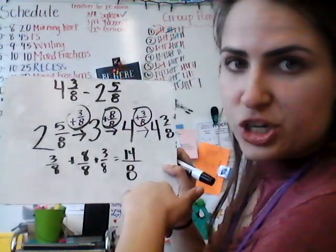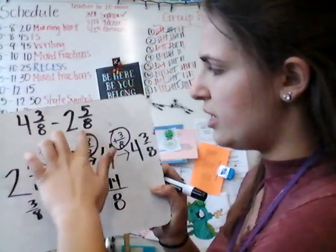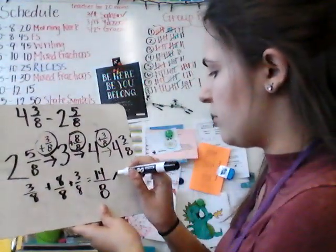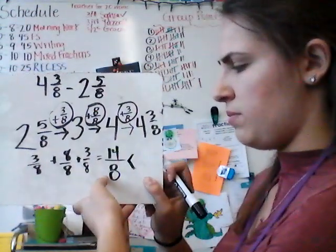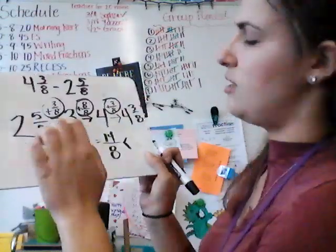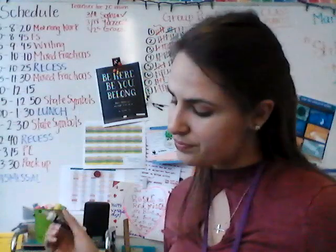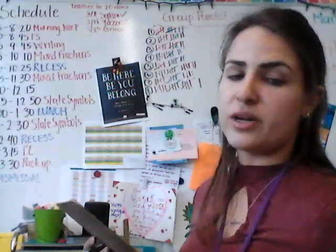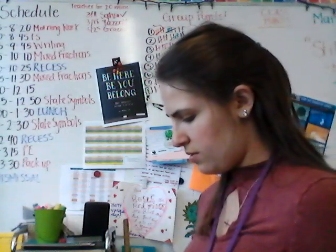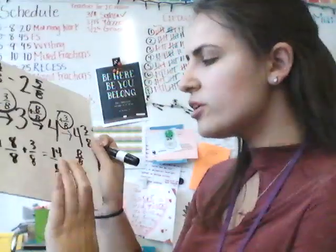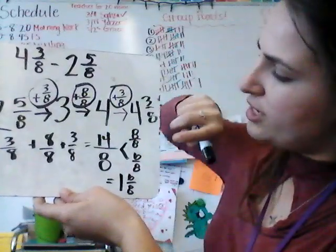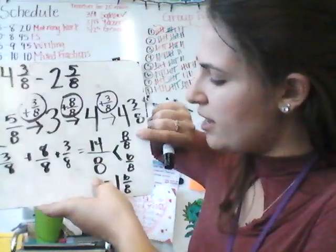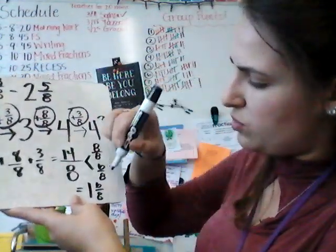Now we can leave it as an improper fraction, or because we are dealing with mixed fractions, it's nice to keep the form the same. So let's turn 14 eighths into a mixed fraction. Using a number bond, I split 14 eighths — since one whole is 8 eighths, what we have left over is 6 eighths. So 8 eighths is the same as one whole, and then we have 6 eighths left over. This gives us 1 and 6 eighths.